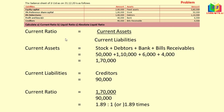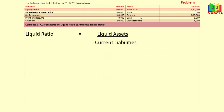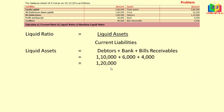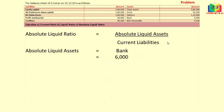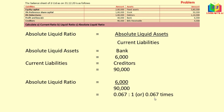For liquid ratio (liquid assets ÷ current liabilities): we exclude stock and take debtors, bank, and bills receivables = 1,20,000. Divided by current liabilities 90,000 gives 1.33:1 or 1.33 times. For absolute liquid ratio (absolute liquid assets ÷ current liabilities): only bank (6,000) qualifies as we have no marketable securities. So 6,000 ÷ 90,000 = 0.067:1 or 0.067 times.